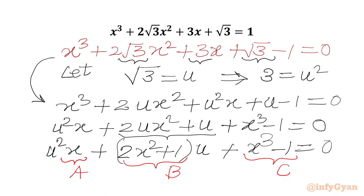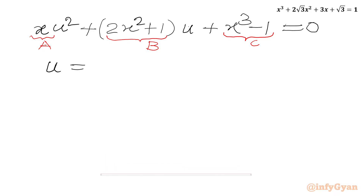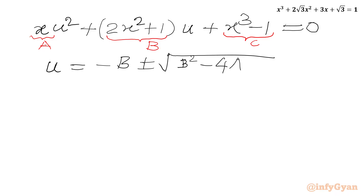Now we can use the quadratic formula. We know u = √3, and we will calculate u from the formula: u = [−b ± √(b² − 4ac)] / (2a).